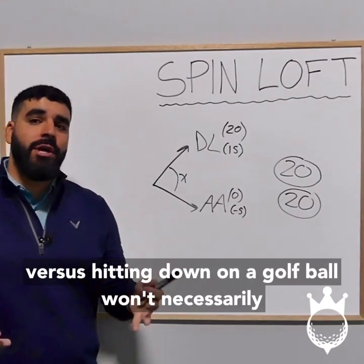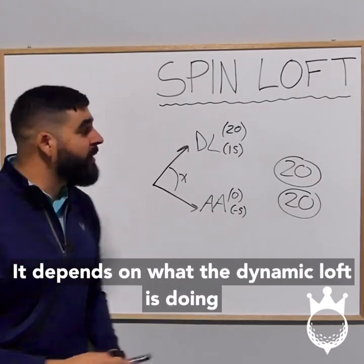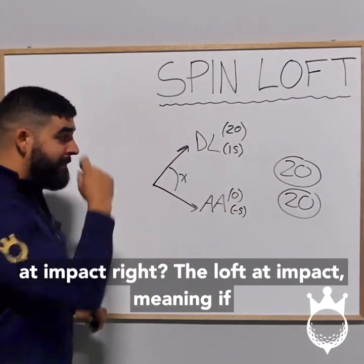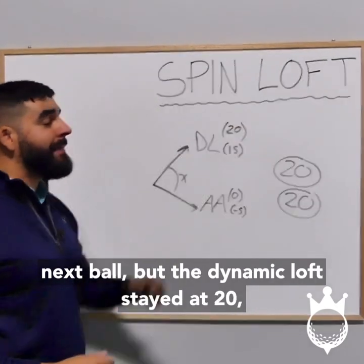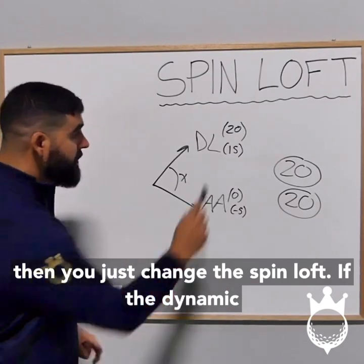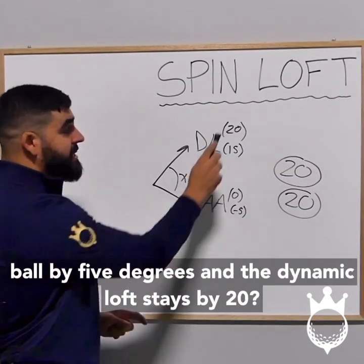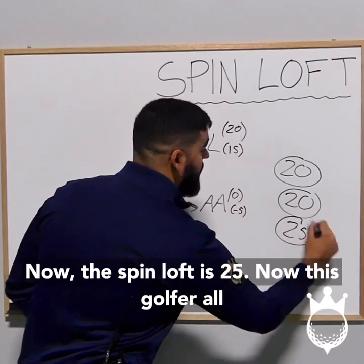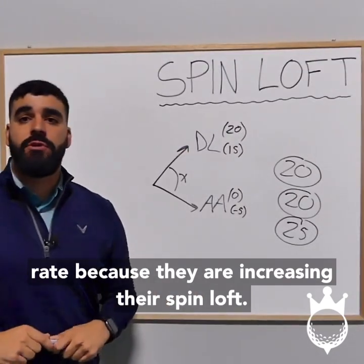So hitting up versus hitting down on a golf ball won't necessarily make you hit the ball with more or less spin. It depends on what the dynamic loft is doing at impact — the loft at impact. If the golfer hits down by five degrees on the next ball but the dynamic loft stays at 20, then you just changed the spin loft. If the dynamic loft was 20 and the golfer hits down by five degrees and the dynamic loft stays at 20, now the spin loft is 25. This golfer, all things equal, will actually increase the spin rate because they are increasing their spin loft.